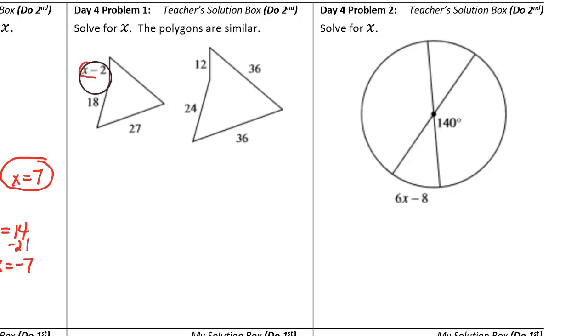The x minus 2 in the small shape corresponds to the 12 in the large shape. The 18 in the small shape corresponds to the 24 in the large shape.